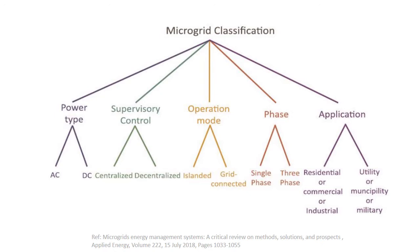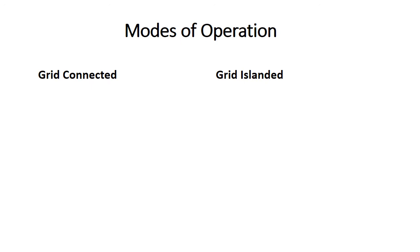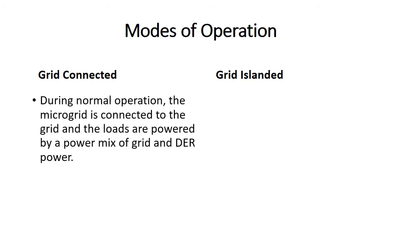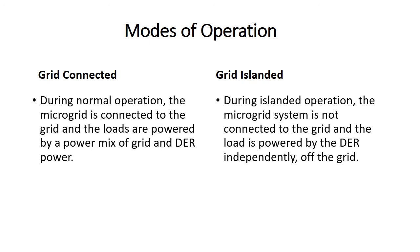Modes of operation: in grid-connected mode, during normal operation the microgrid is connected to the grid and the loads are powered by a mix of grid power and distributed energy resources. In grid-islanded mode, the microgrid system is not connected to the grid and the load is powered by the distributed energy resources independently of the grid.